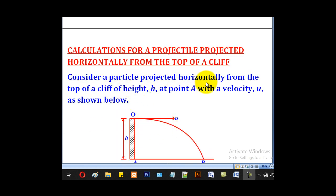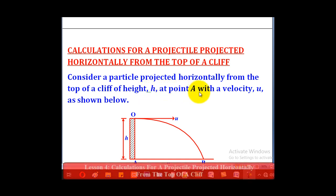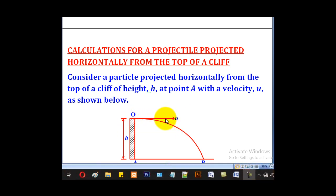Consider a particle projected horizontally from the top of a cliff of height h at point A with a velocity u as shown below. This is a cliff, the top of the cliff is at O, the height of the cliff is h, and the velocity of projection is u. It is horizontal, entirely horizontal.